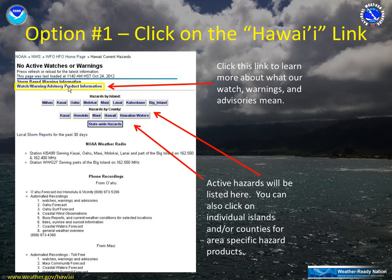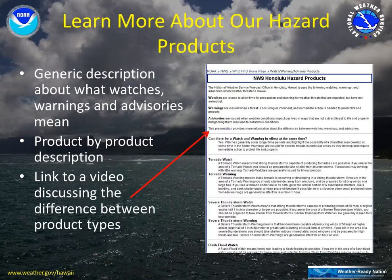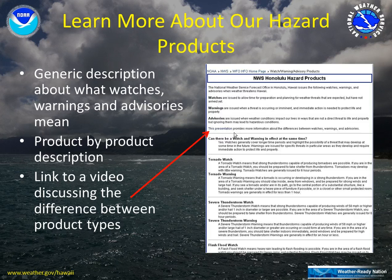Now this link up here — this watch warning advisory product information — is a link that takes you to a sheet which will give you more information, more specifically about what our watches, warnings and advisories specifically mean, listed by hazard. It gives you a generic description about what watches, warnings and advisories mean at the top of the page. There's also a link to a video presentation that goes through these differences as well. Down below is a product-by-product description of what to expect when you see these products issued, describing what a tornado warning is or what a flash flood watch and warning may be.